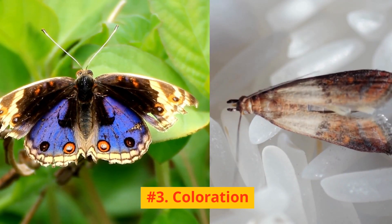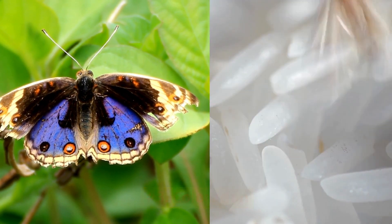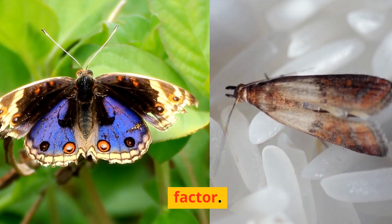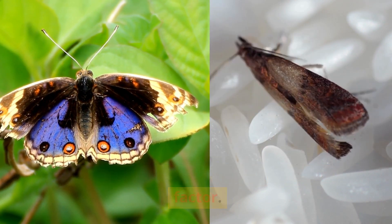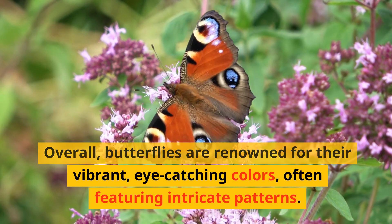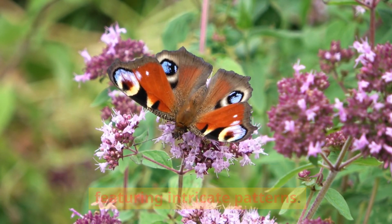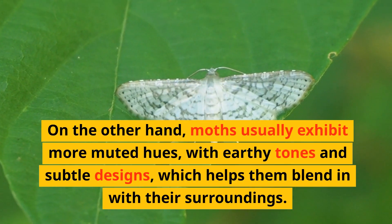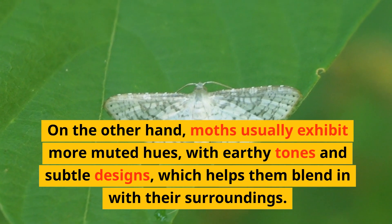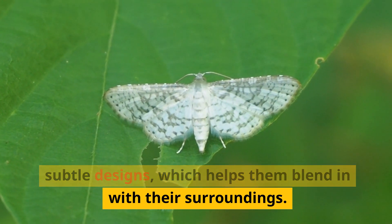Number 3: Coloration. Coloration is another distinguishing factor. Overall, butterflies are renowned for their vibrant, eye-catching colors, often featuring intricate patterns. Moths, on the other hand, usually exhibit more muted hues, with earthy tones and subtle designs, which helps them blend in with their surroundings.